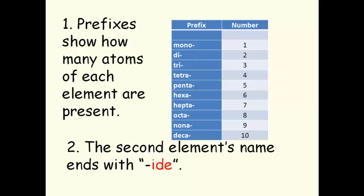The prefixes show how many atoms of each element are present. If we look at the chart on the right, we'll see that mono means one, di means two, tri means three, tetra four, penta five, hexa six, hepta seven, octa eight, nona nine, and deka ten. You should know this list.